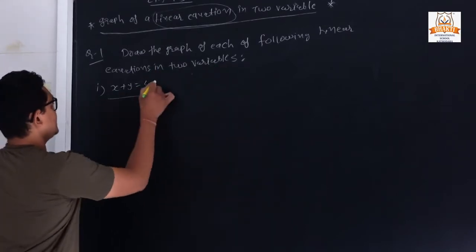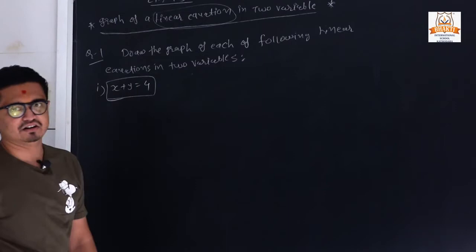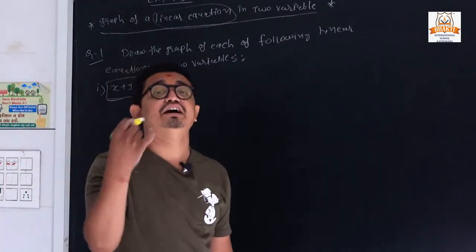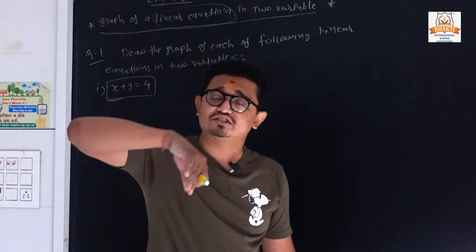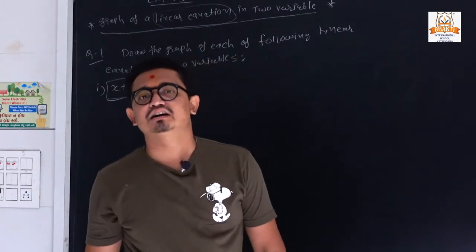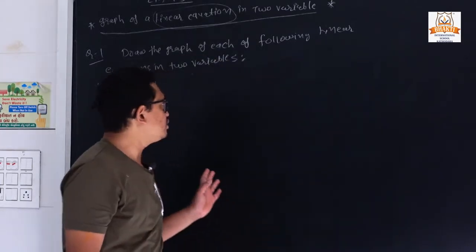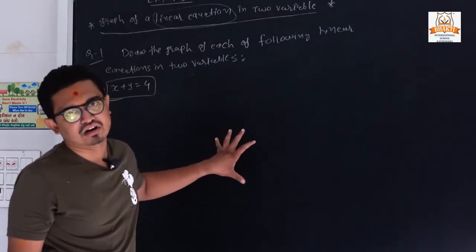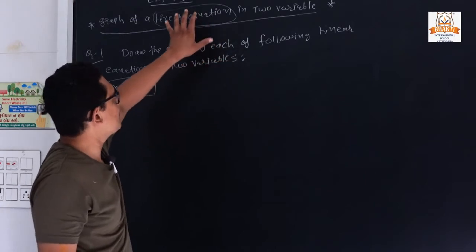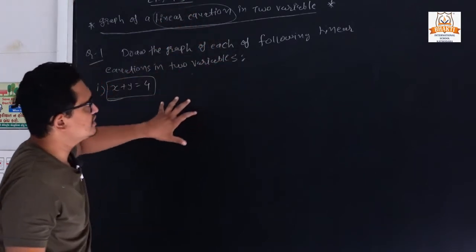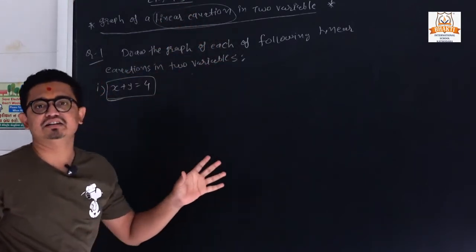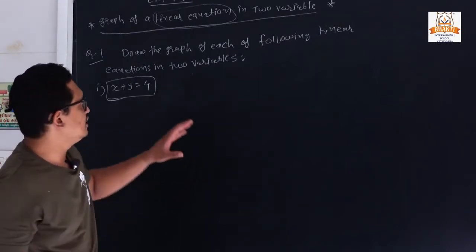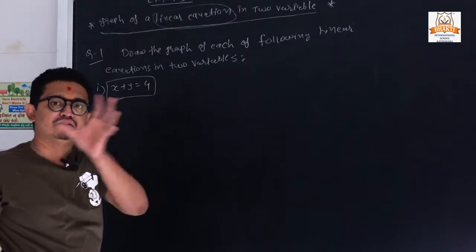The first equation is x plus y equals 4. First, you need to find four or five solutions, and from those solutions you can plot the graph. You can do this work in your graph book only. From exercise 4.3 onwards, if we have a graphical question, you can directly write in your graph book and do the calculations on the page below.